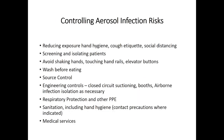How do we control aerosol infection risks? Routine measures include hand hygiene, cough etiquette, social distancing, screening and isolating patients, and avoiding touching handrails, reusable cups, elevator buttons, and escalator rails. Wash hands before eating. Source control if a person is symptomatic. Engineering controls include closed-circuit suctioning, airborne infection isolation in healthcare settings, biosafety cabinets for lab workers, and respiratory protection and other PPE. Medical surveillance of employees — like taking temperature multiple times daily — is also important.